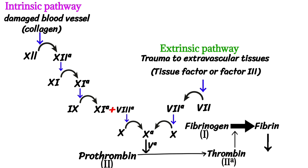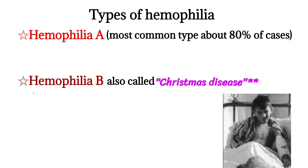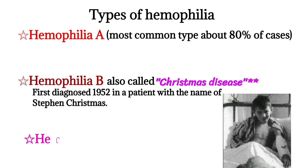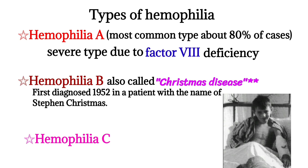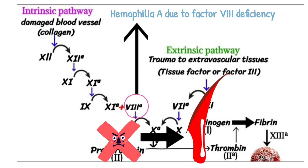Types of haemophilia: Haemophilia A is the most common type. Haemophilia B is also called Christmas disease, because it was first diagnosed in 1952 in a patient named Steven Christmas. Looking at the intrinsic pathway, Haemophilia A is due to factor 8 deficiency, which leads to bleeding because the pathway is not properly activated.